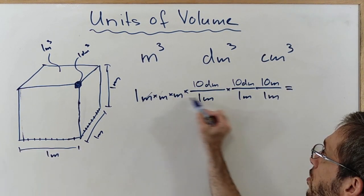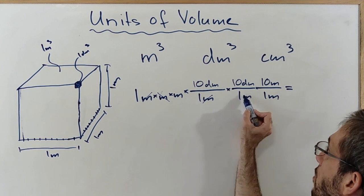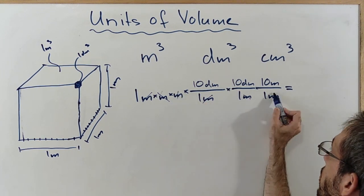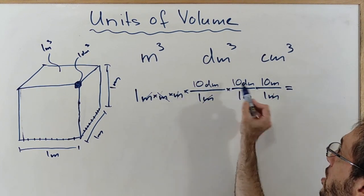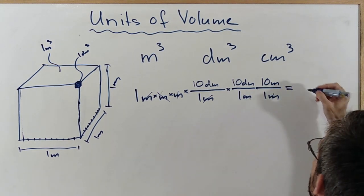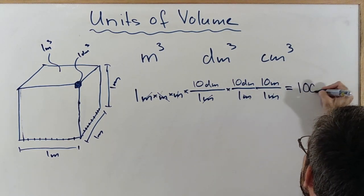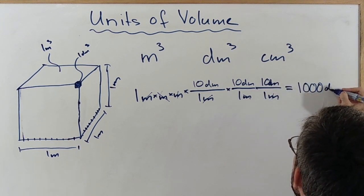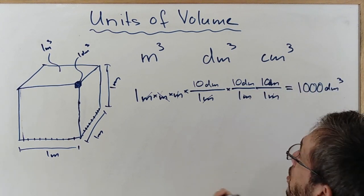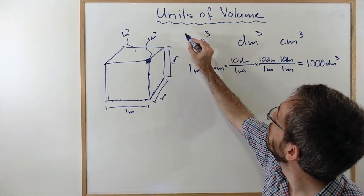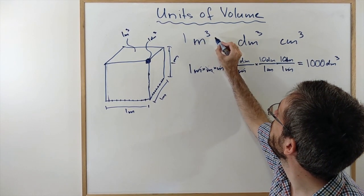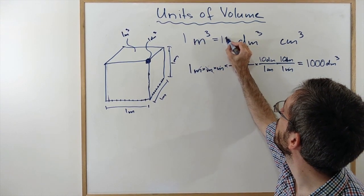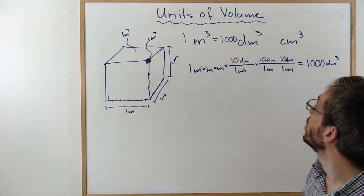The meter here gets rid of the meter here, that meter gets rid of that meter here, and that meter gets rid of that meter here. So 10 times 10 times 10 gives me 1,000 decimeter cube. So I have 1 cubic meter is 1,000 decimeter cube.